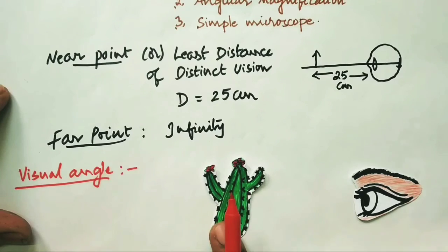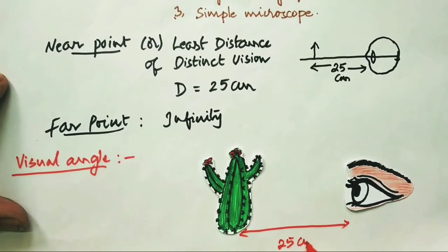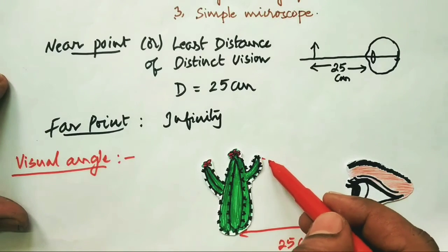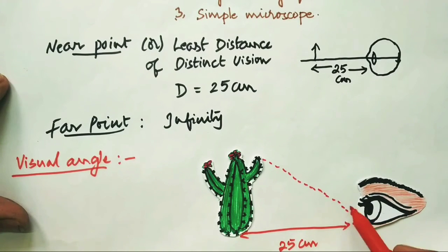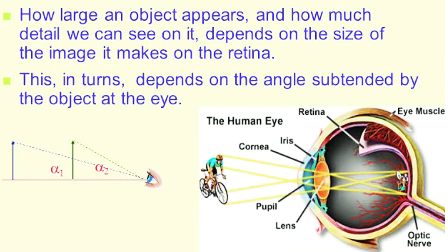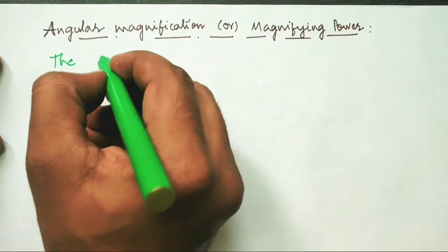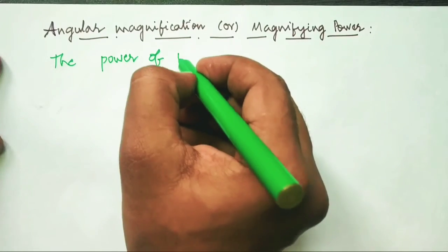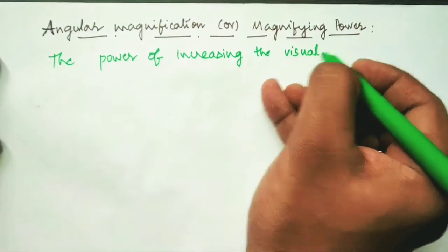When an object is viewed from the least distance of distinct vision — 25 centimeters — the angle subtended at the eye is called the visual angle, denoted by theta naught. The size of any object as it appears to the eye depends on the visual angle. The magnification produced in the angle is known as angular magnification, also called magnifying power, defined as the power of increasing the visual angle.